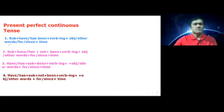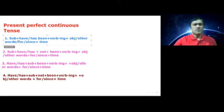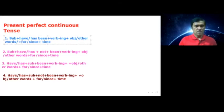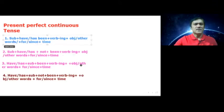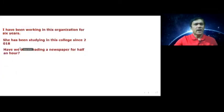So, I am taking you through my whiteboard here. The first structure is: subject plus have/has been plus verb plus object or other words plus for/since plus time. Then we can make a sentence using this structure. I have already written the sentence: I have been working in this organization for six years.